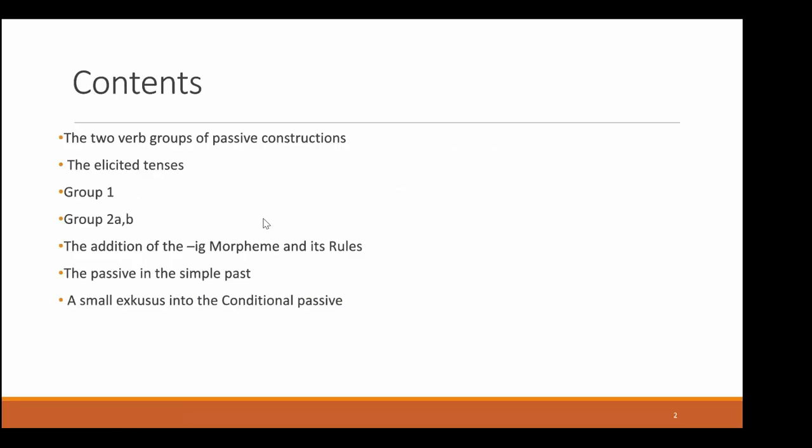Here are the contents. First we're going to look at the two verb groups of passive constructions. Then we're going to look at the elicited tenses: group one, group two A and B, the addition of the IG morpheme, the rules, and the passive in the simple past. And in the end, we're going to look at a small excursion into the conditional passive.